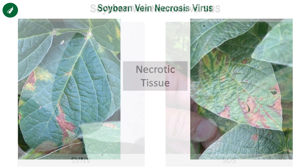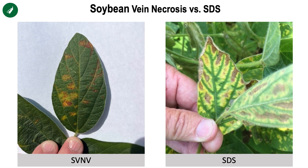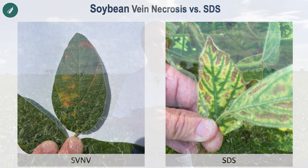Whereas sudden death syndrome or brown stem rot, which look the same above ground, show more of a smattering or random yellowing, but it occurs between the leaf veins initially.